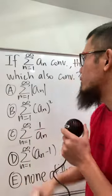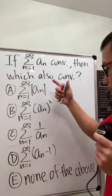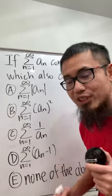This is one of my counter-final exam questions. We have the series of a_n converges, and we need to know which of these also converges.